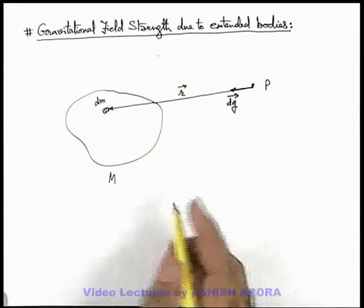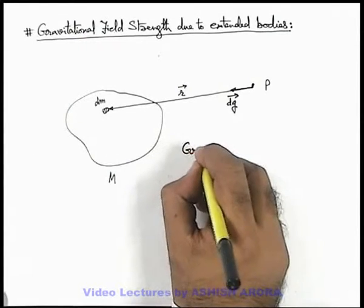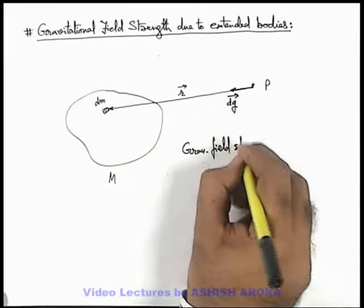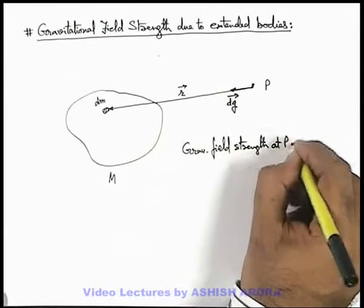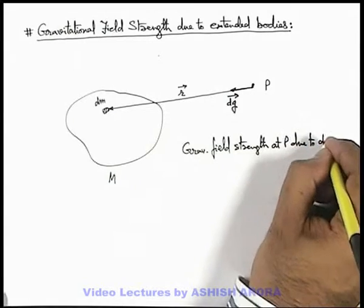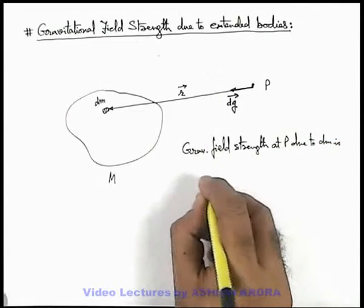So in this situation we can write gravitational field strength at p due to dm is, this dg vector can be written as...